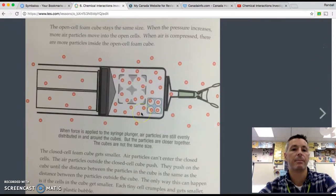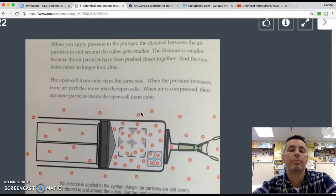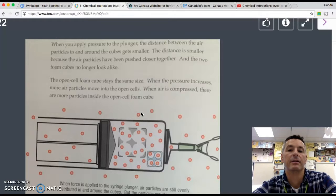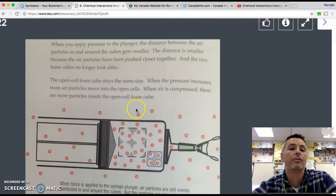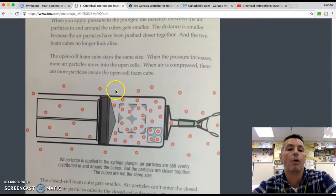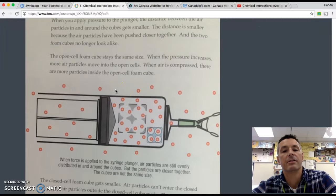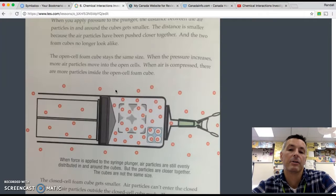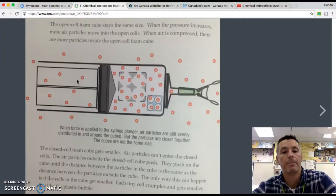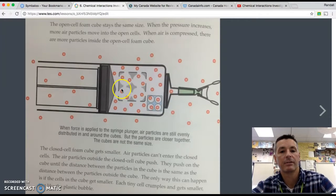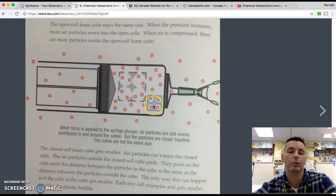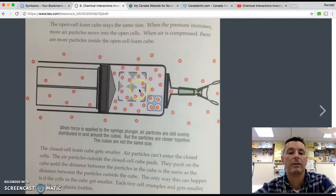Last page. When you apply pressure to a plunger, the distance between the air particles in and around the cube gets smaller. The distance is smaller because the air particles have been pushed closer together and the two foam cubes no longer look alike. The open cell foam cube stays the same size. When the pressure increases, more air particles move into the open cells. When the air is compressed, there are more particles inside the open cell foam cube. So as this is compressed, the blue one shrinks, the gray one does not.